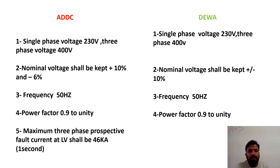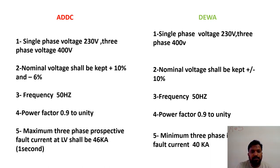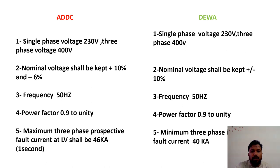The maximum three phase prospective fault current for the MDB is 46kA for one second under ADDC, whereas under DEWA it is 40kA.